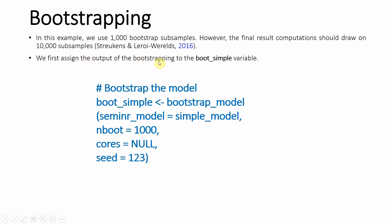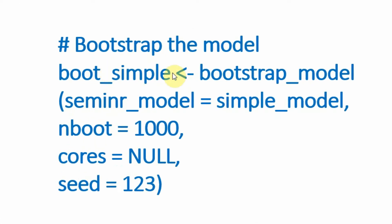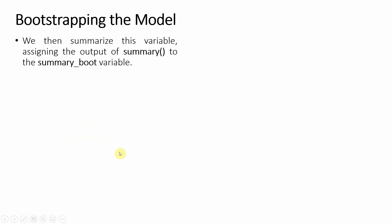We first assign the output of bootstrapping to a boot_simple variable or object. Every time we run a function we get an output and we store it in an object — in this case our object is boot_simple. Previously it was simple_model or summary_simple for summarization. So bootstrap_model is the function. The argument is: which model do you want to bootstrap — I want to bootstrap simple_model. The bootstrap subsamples are 1000 in this case, cores is null by default, and seed is default as well.